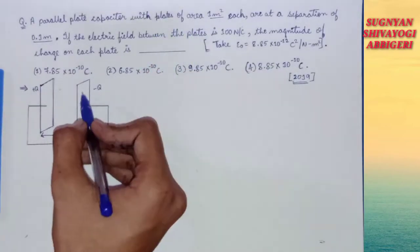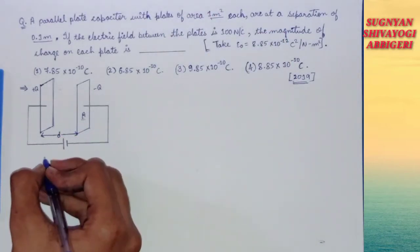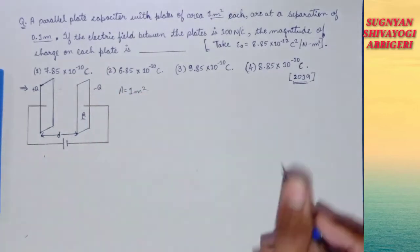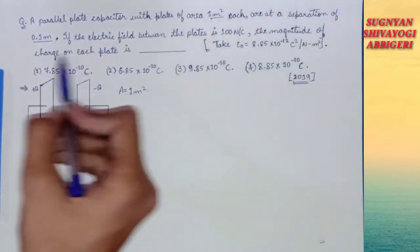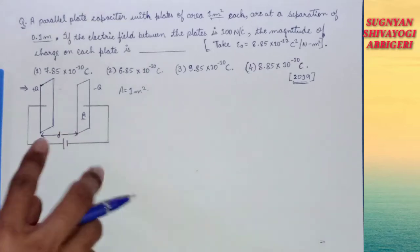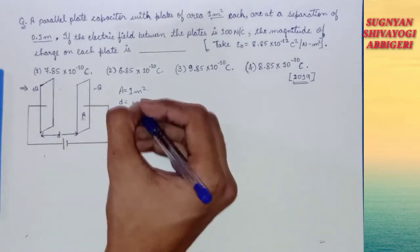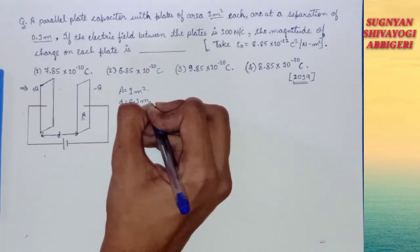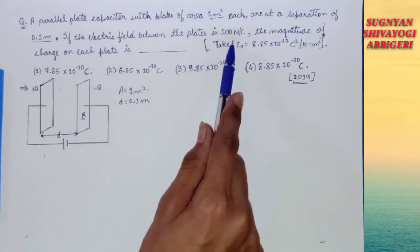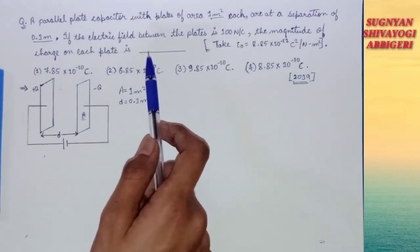Given in the question: the plates have an area of 1 meter square each, represented by capital A. So A = 1 m². These plates are kept at a separation of 0.1 meter, represented by small d. So d = 0.1 m. Next, the electric field between the plates is 100 newton per coulomb, and we need to find the magnitude of charge on each plate.